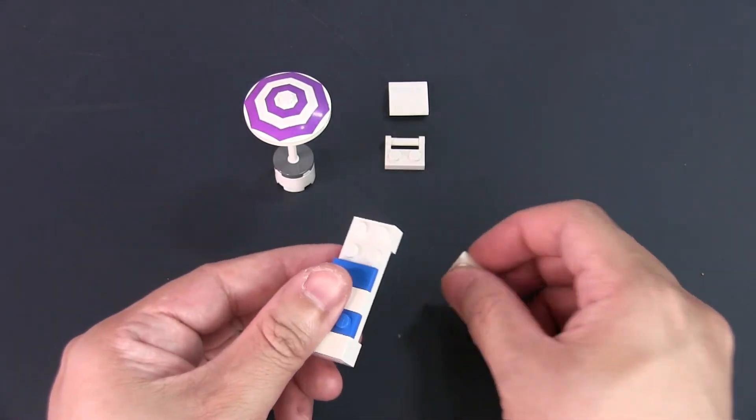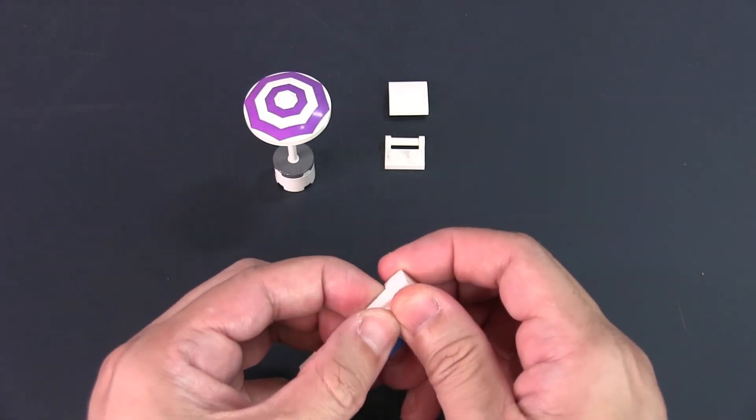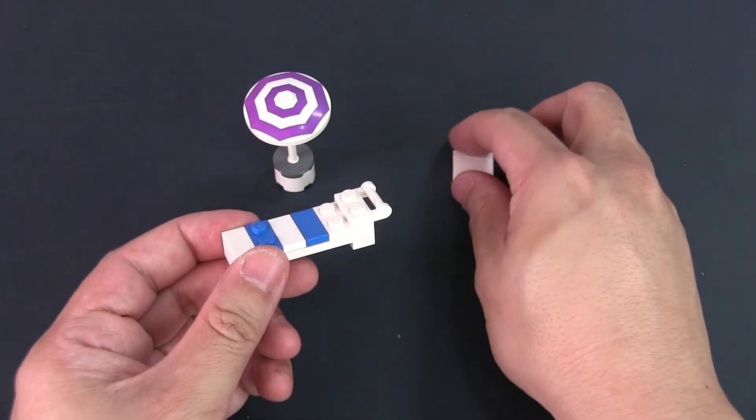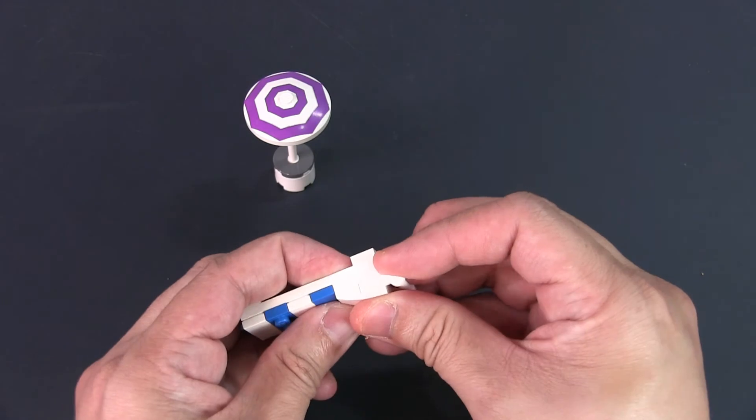Place the 2x2 plate over the remaining space. Take the 1x2 modified bar plate and place it on the end and cap everything off with a 2x2 curved sloped tile.